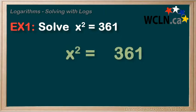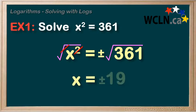Well, we're squaring the x, so to isolate it, the opposite of squaring is square rooting, so we pull out our calculator and the square root of 361 is 19.